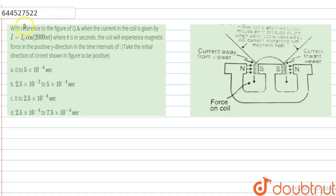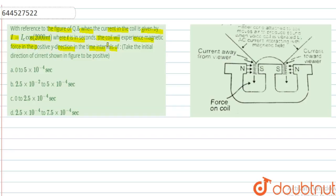We are going to solve this question. First let us understand what this question is saying with respect to the figure. The current in the coil is given by i = i_c cos(2000πt), where t is in seconds. The coil will experience magnetic force in the positive y direction in some time interval — we have to find when the force direction will be along the positive y direction.